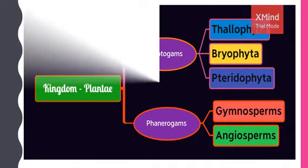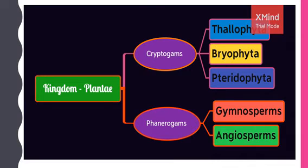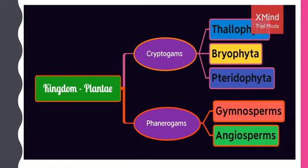In this video, we are going to learn about Cryptogams, which means non-flowering plants. Under this category, all the non-flowering plants are classified into three different divisions: Division 1 Thallophyta, Division 2 Bryophyta, and Division 3 Pteridophyta. We will learn about each division, their characteristic features and examples.